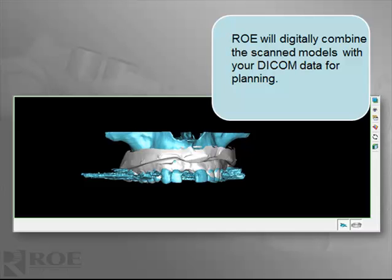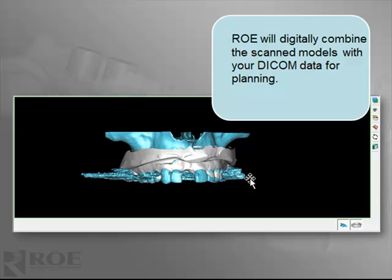Once that's scanned, we're able to superimpose the model — as you can see in white here — over top of the DICOM data. It's critical that the patient have limited restorative work involving metal, because scatter can prevent our ability to correlate these two datasets.